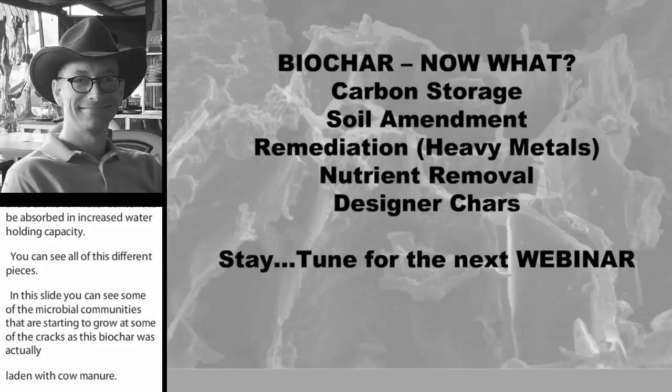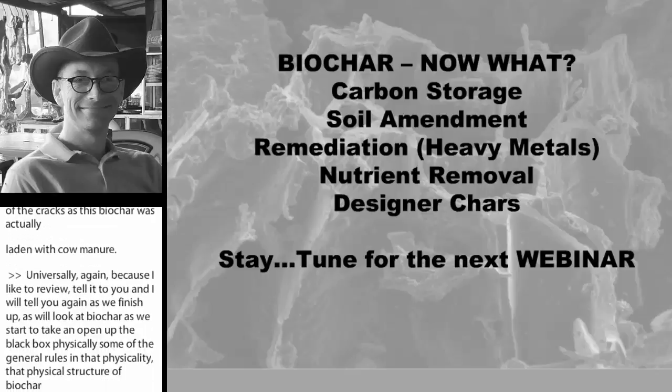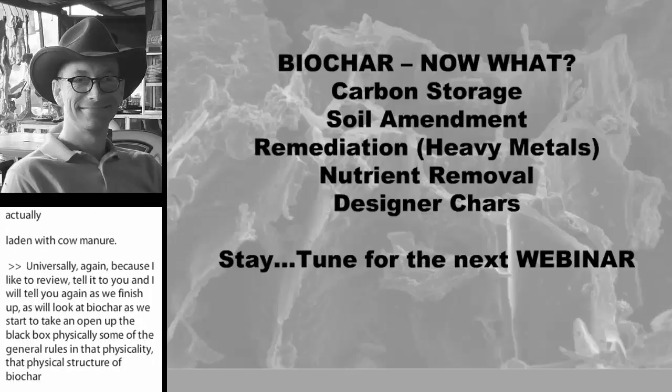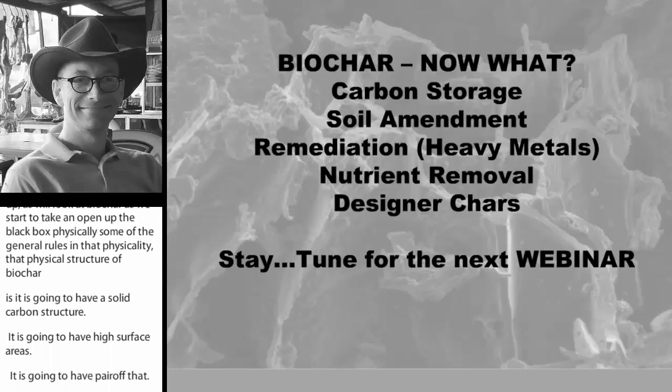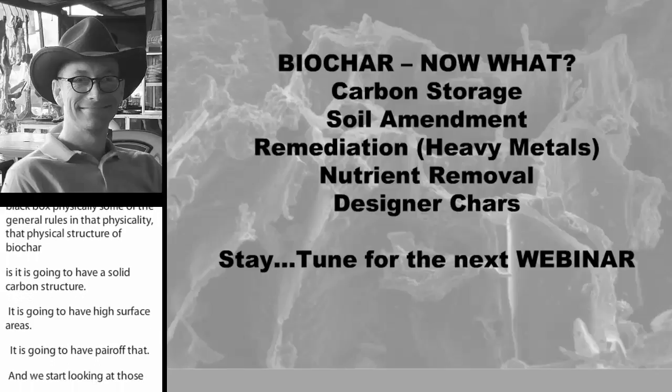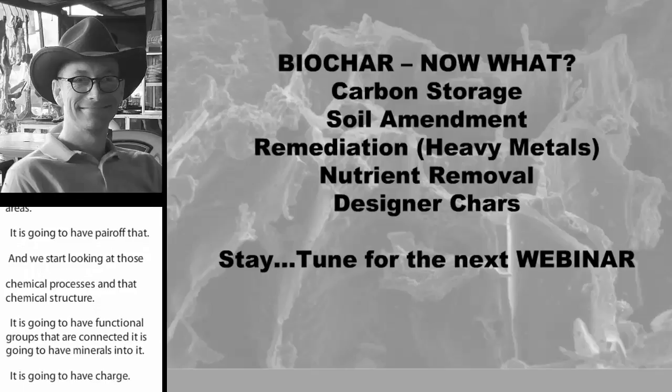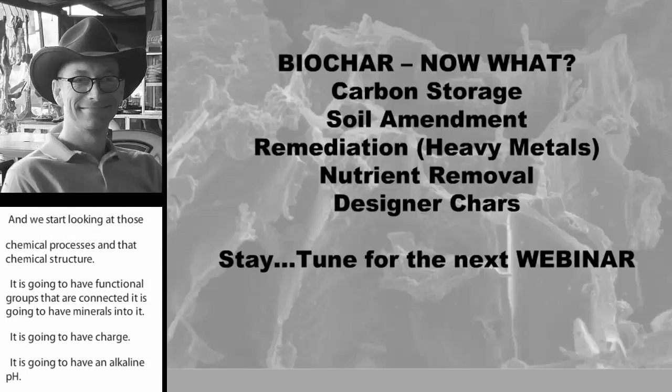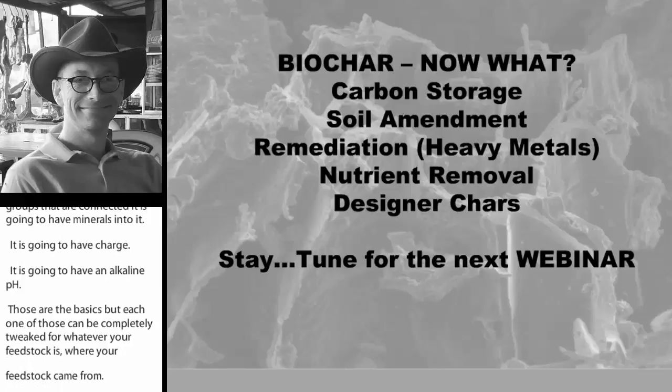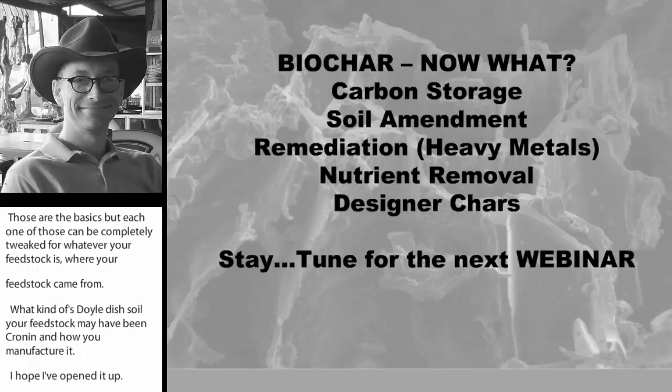Universally, again, because I like to review, I tell it to you and then I'll tell you it again as we finish up. As we look at biochar, as we start to open up the black box, physically some of the general rules in that physical structure of biochar is it's going to have a solid carbon structure, it's going to have high surface areas, it's going to have porosity. When we start looking at those chemical processes and that chemical structure, it's going to have functional groups that are connected, it's going to have minerals in it, it's going to have charge, it's going to have an alkaline pH. Those are the basics, but each one of those can be completely tweaked for whatever your feedstock is, where your feedstock came from, what type of soil your feedstock may have been grown in, and then how you manufacture it. So I hope that I've opened it up, I've given you the basics so that you can now dig deeper into what this looks like and that chemical and physical structure.